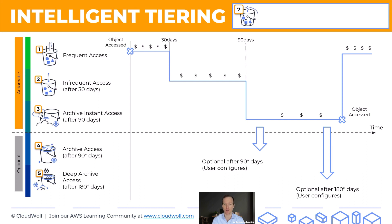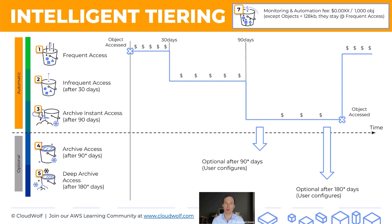A few notable features about this storage class: there's a monitoring and automation fee, which is usually a fraction of a cent per thousand objects, except for objects under 128 kilobytes. Those are too small to make it cost-effective to move them around, so if you put them into intelligent tiering they will just be kept at frequent access all the time. Finally, there's no retrieval fee from archive, except if you choose the expedited version.